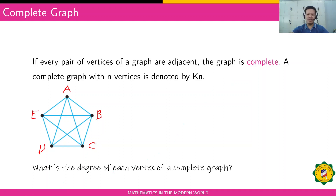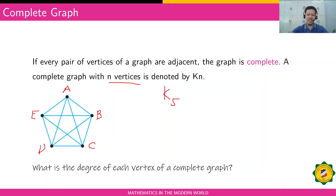We can denote a complete graph as K sub n, where n is the number of vertices. In this example with five vertices, it's K sub 5. The degree of each vertex — vertex A has degree four, vertex B has degree four, vertex C has degree four — they are all the same. For a complete graph, the degree of each vertex is n minus one.